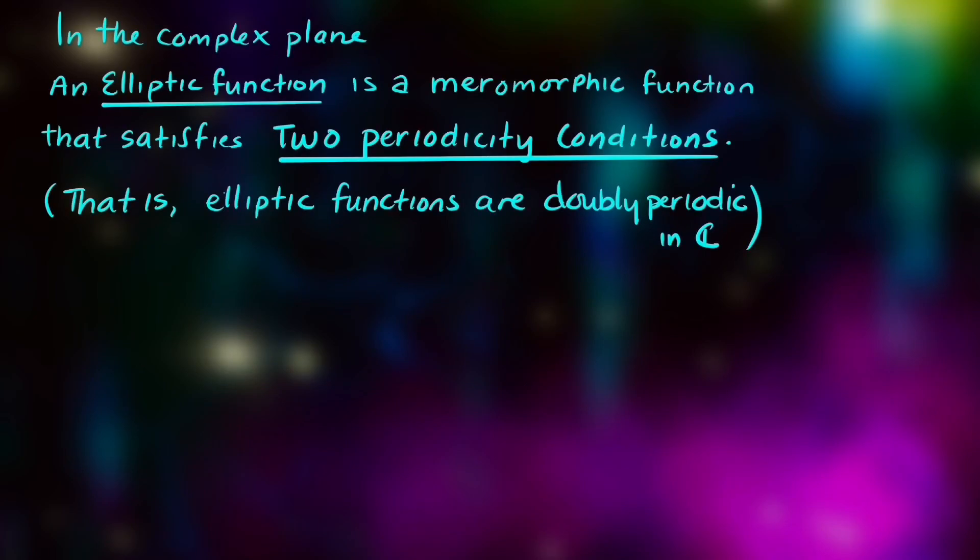In the complex plane, an elliptic function is a meromorphic function that satisfies two periodicity conditions. That makes it a doubly periodic function in the complex plane, helping us define hyperelliptic functions and modular forms.